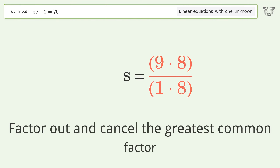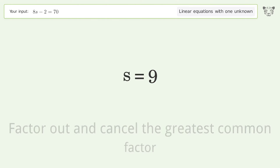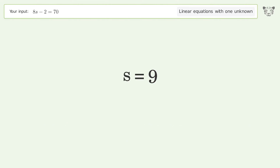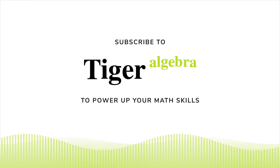Find the greatest common factor of the numerator and denominator, then factor out and cancel the greatest common factor. And so the final result is s equals 9.